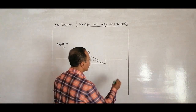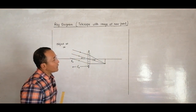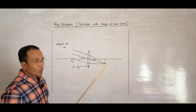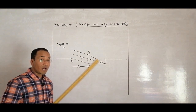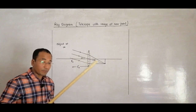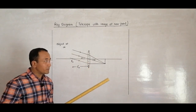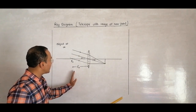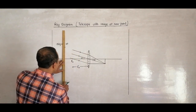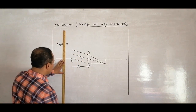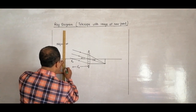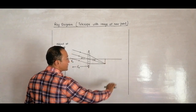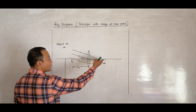Now after that, things slightly change. We have to form the image at the near point, so image should be somewhere here, not at infinity. Where the image is formed will be under our control — in my technique, wherever the image is formed will be under my control. So I can form the image anywhere I like. So let me form the image here. This will be a large, magnified image.